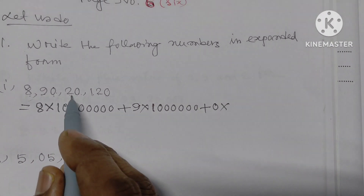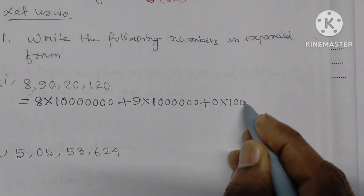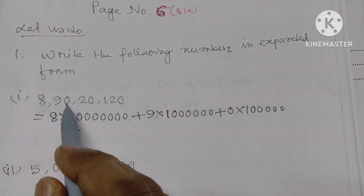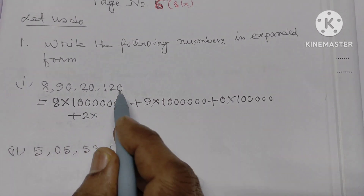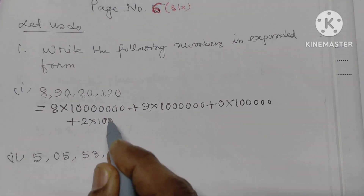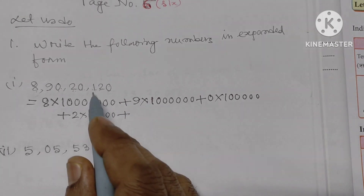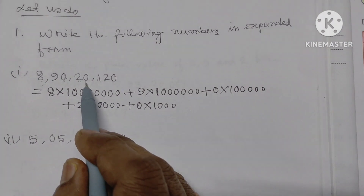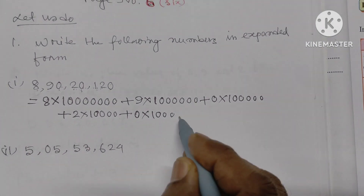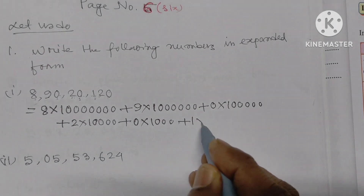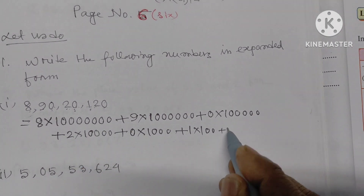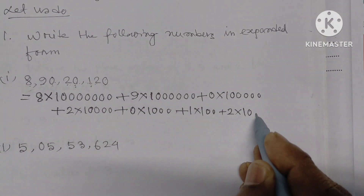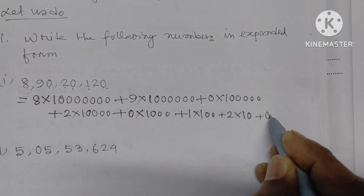This 0 is a digit. We have 1, 2, 3, 5, 6 digits after it. Plus 0 and 2, so 2 into 1, 2, 3, 4, 5, 6, 7. Then 1 into 1, 2, 3. That means 1 into 1,000. Then 1 into 100. Plus 2 into 10, plus 1 into 1. So the expanded form is complete.